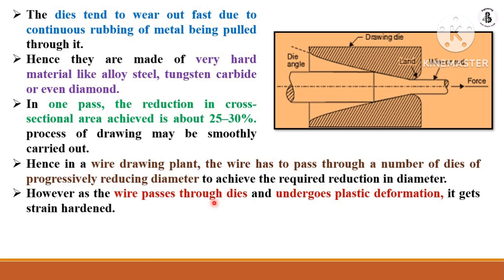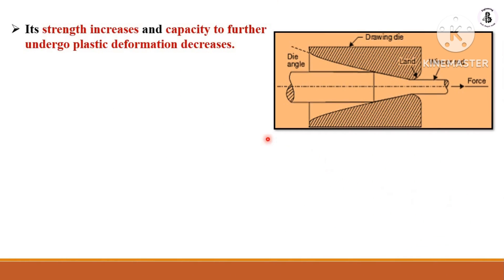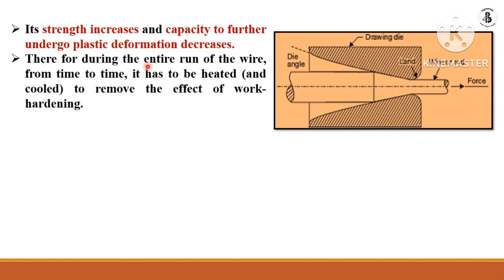As the wire passes through the dies, it undergoes plastic deformation — permanent deformation — and gets strain hardened. Due to this, the strength of the material increases but its capacity to undergo further plastic deformation decreases.